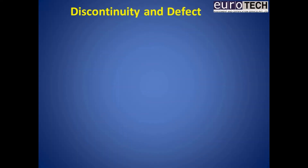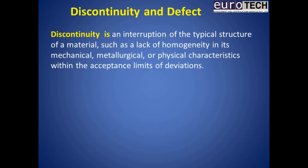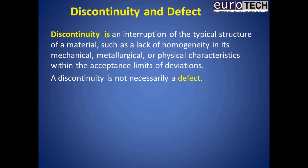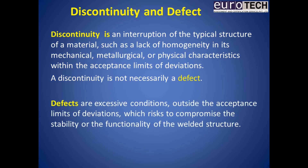Let us clarify the difference between discontinuity and defect. A discontinuity is an interruption of the typical structure of a material, such as a lack of homogeneity in its mechanical, metallurgical, or physical characteristics, within the acceptance limits of deviations. A discontinuity is not necessarily a defect. Whereas defects are excessive conditions outside the acceptable limits of deviations which risk compromising the stability or functionality of the welded structure.